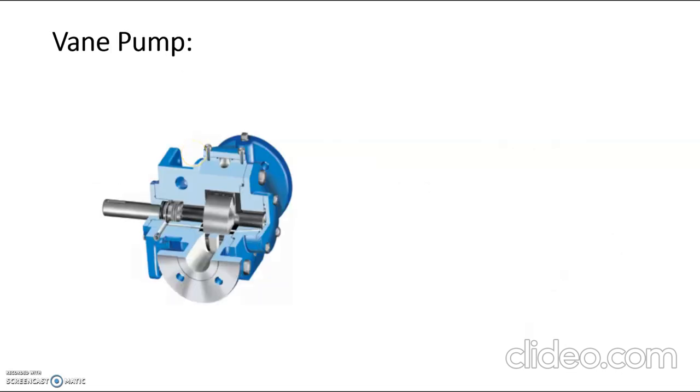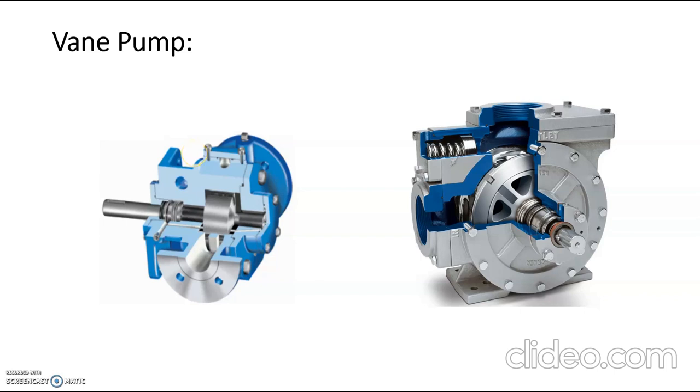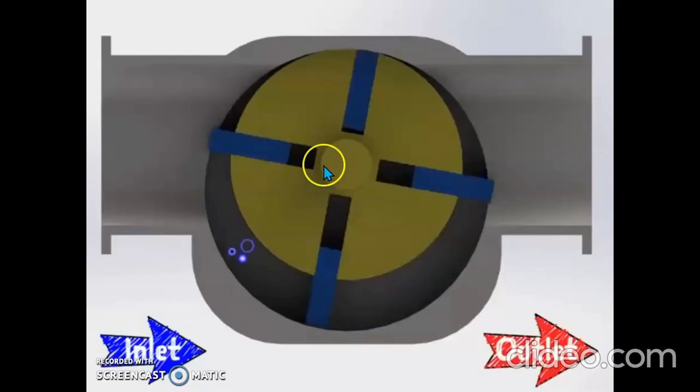These are the images of vane pump. Now let's see the working of rotary vane pump. We can see this is the rotor. The rotor consists of sliding vanes. This is the sliding vane. Now let's see the working.